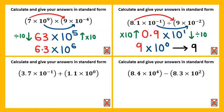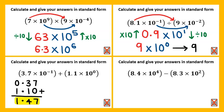Three point seven times ten to the power of negative one is zero point three seven. One point one times ten to the power of zero, or one point one times one, will just stay the same, so this can be written as one point one zero underneath. Adding these together we get one point four seven. Putting this back into standard form, the significant figures are already between one and ten, so the answer would be one point four seven multiplied by ten to the power of zero, which can just be written as one point four seven.